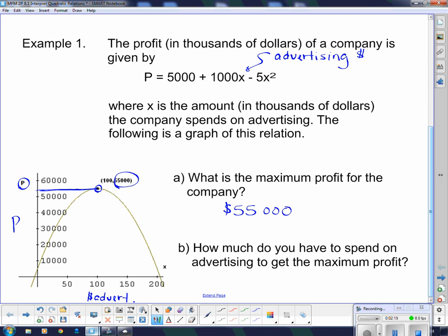And then it says, how much do you have to spend on advertising to get that maximum profit? Well, it's asking us for this other value here. That value is 100. If we go down here on the x value, it says 100. Now remember, that's not $100 because it says in thousands of dollars. So this is $100,000. And we got all that just by picking points off the graph.